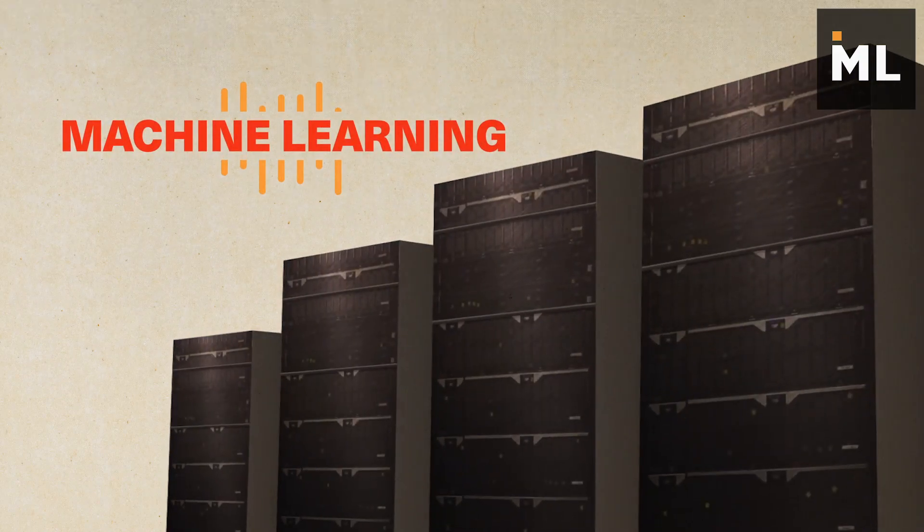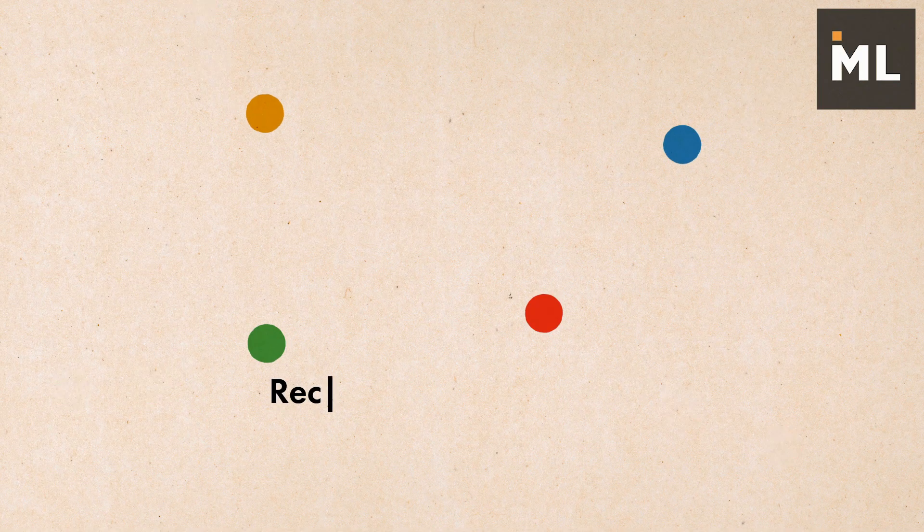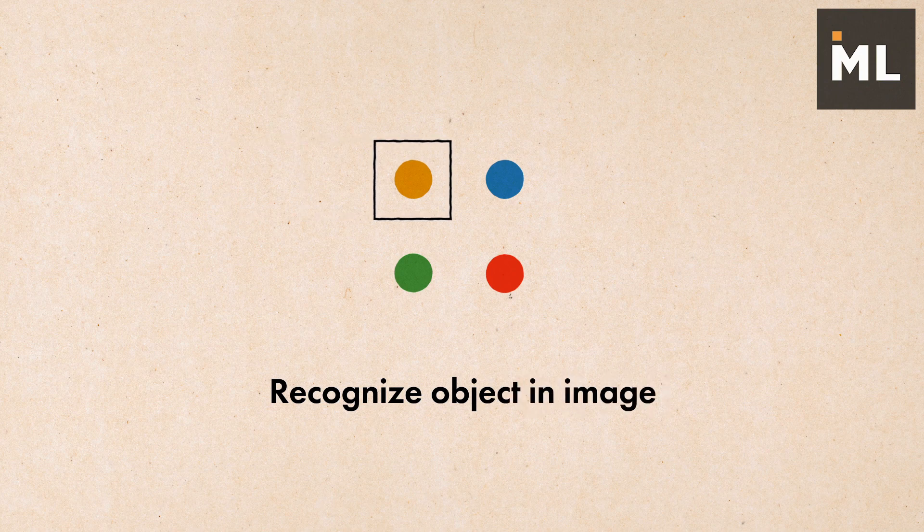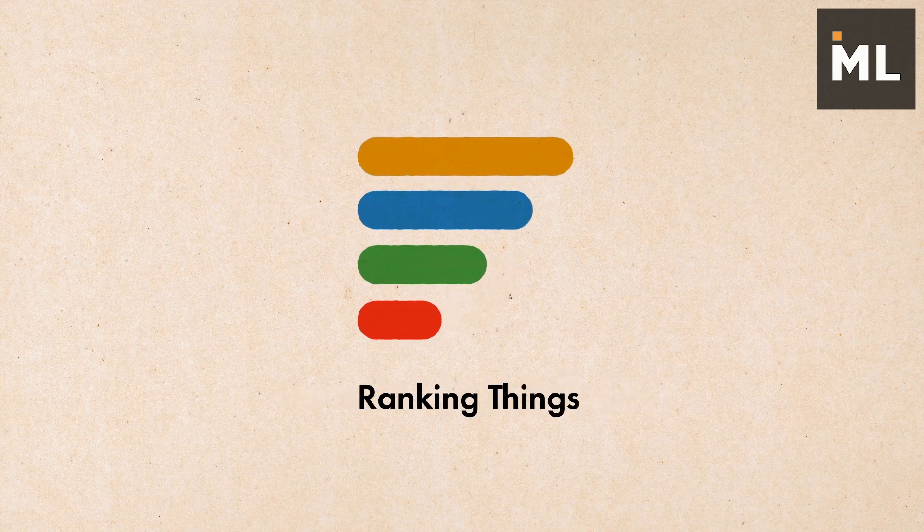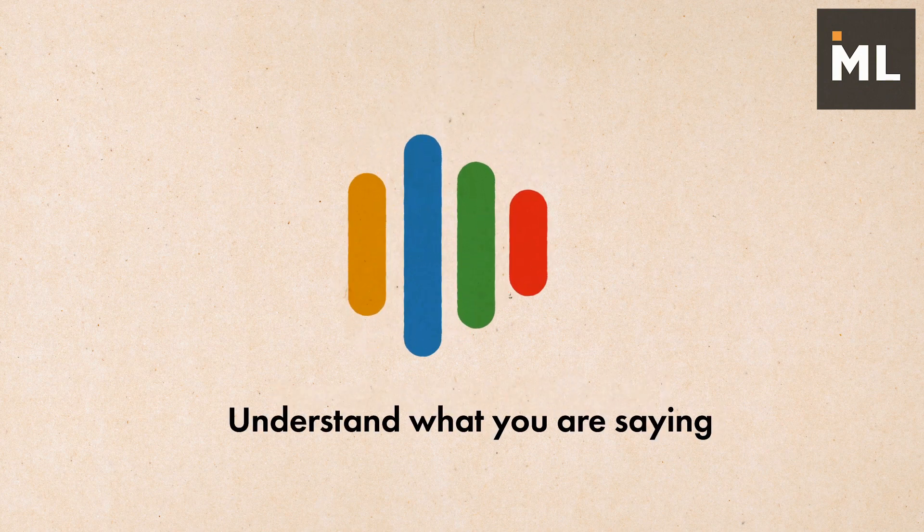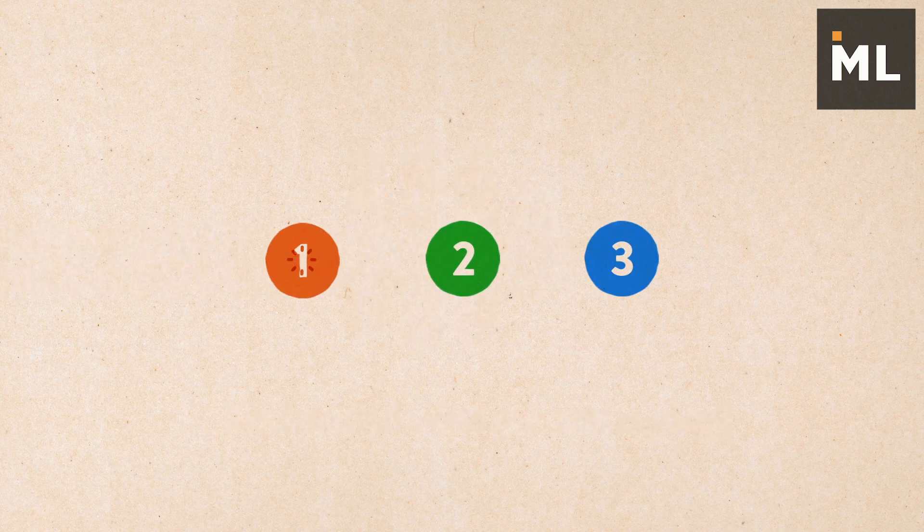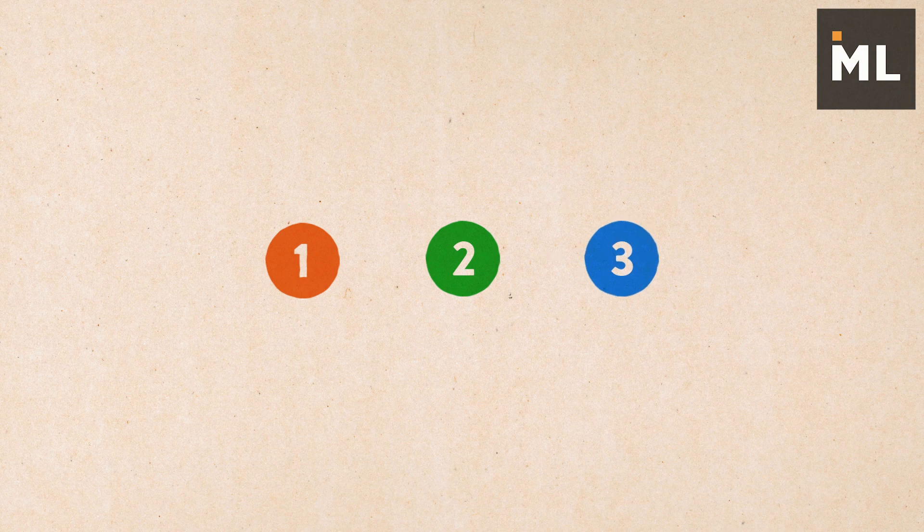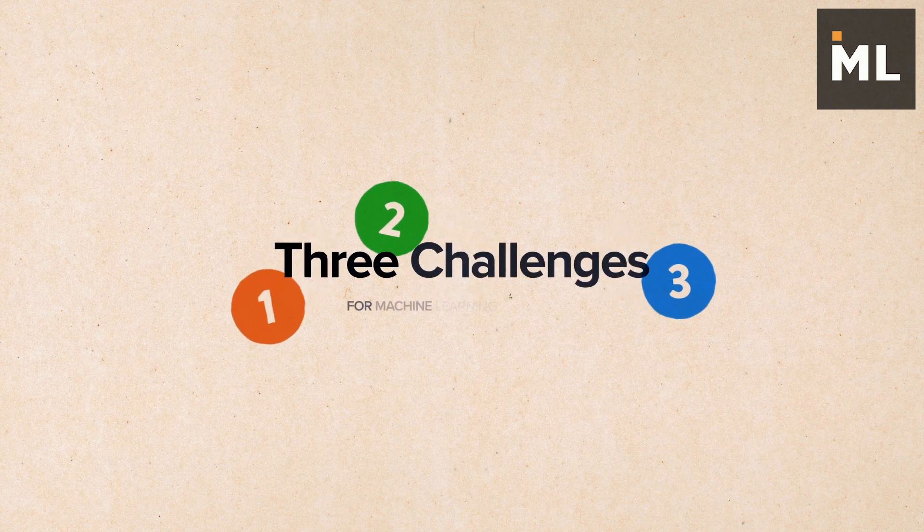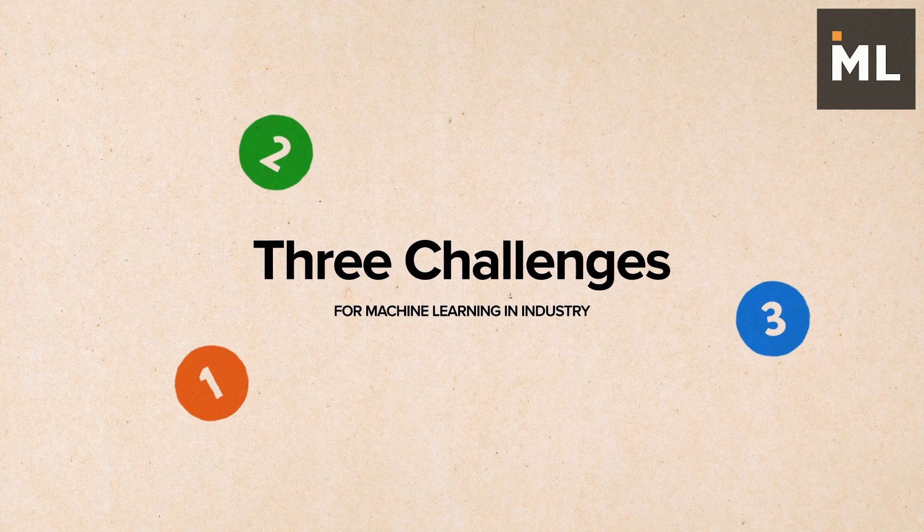Machine learning has revolutionized many industries today. It can help us recognize objects, rank things, and even understand what we're seeing. But it's still in its early stage and faces many challenges. Here I'll list three major challenges in machine learning from research to industry and explain our current solutions to each.